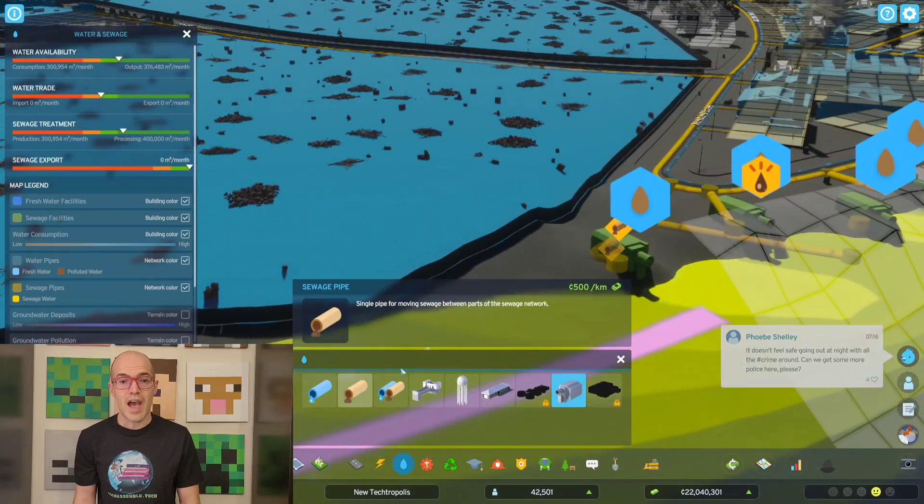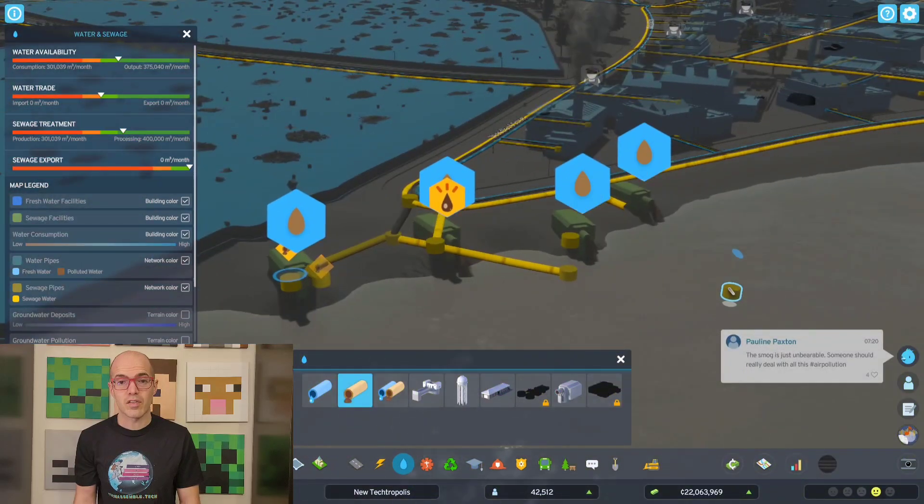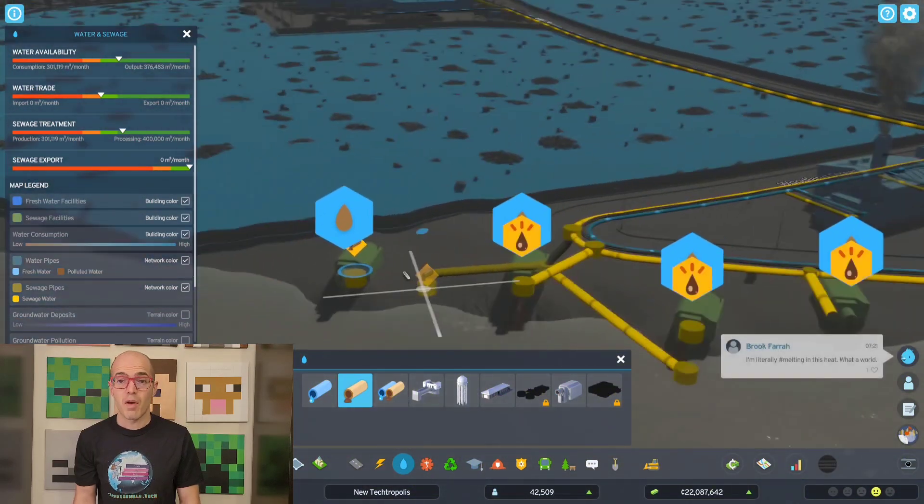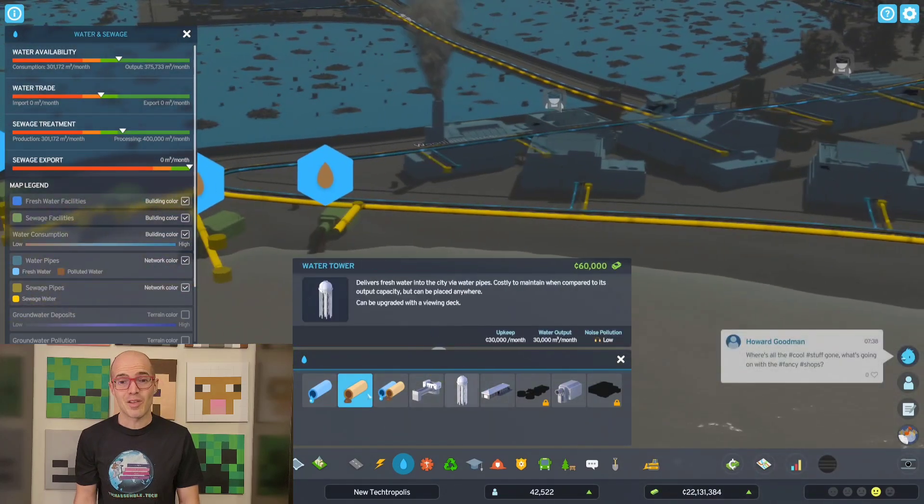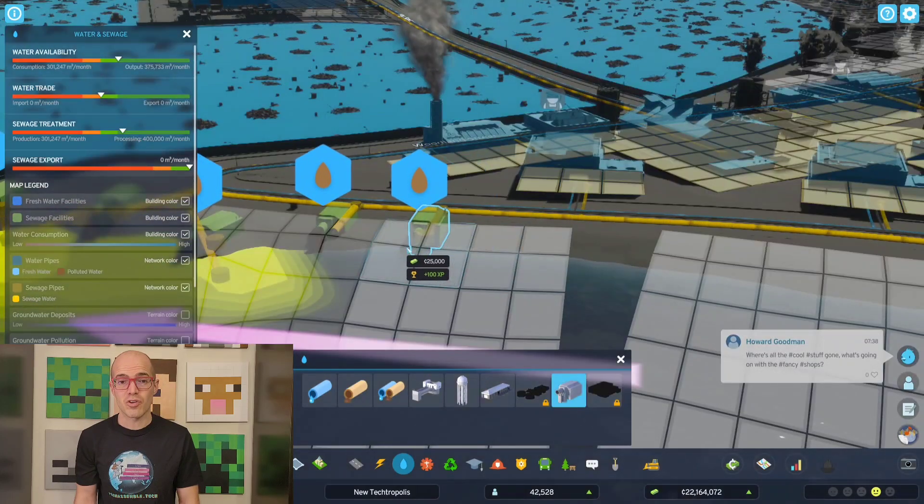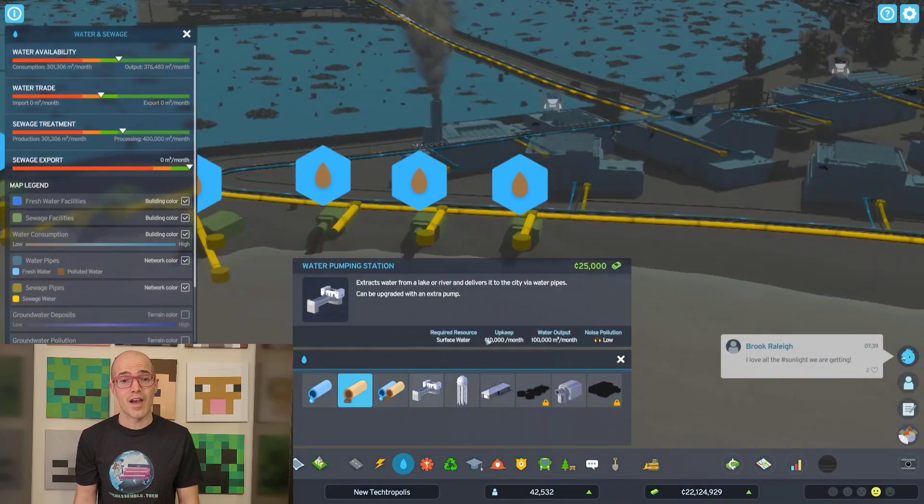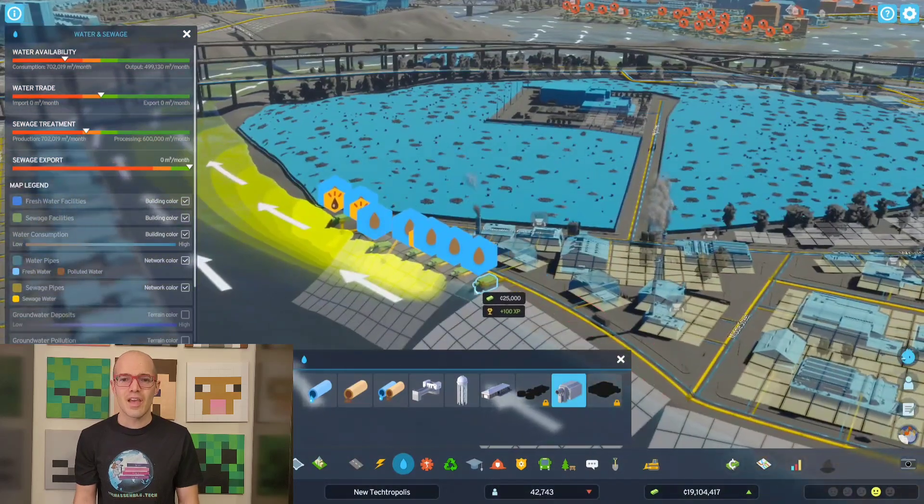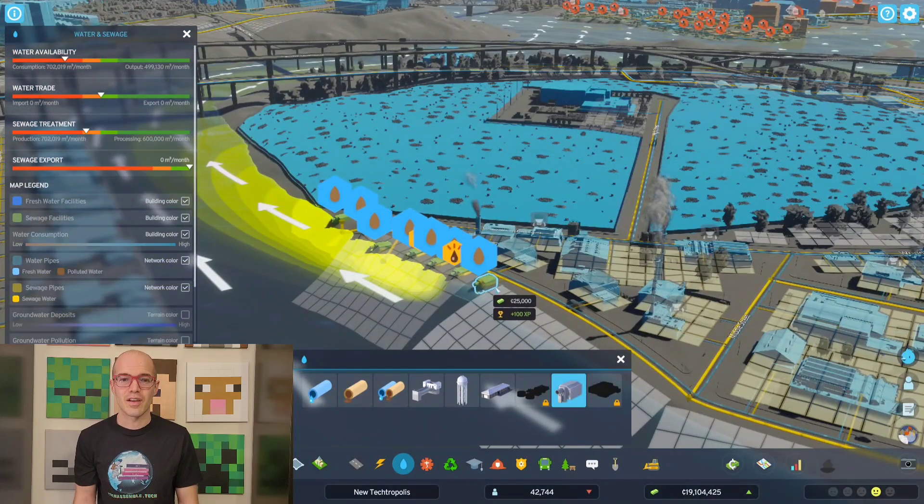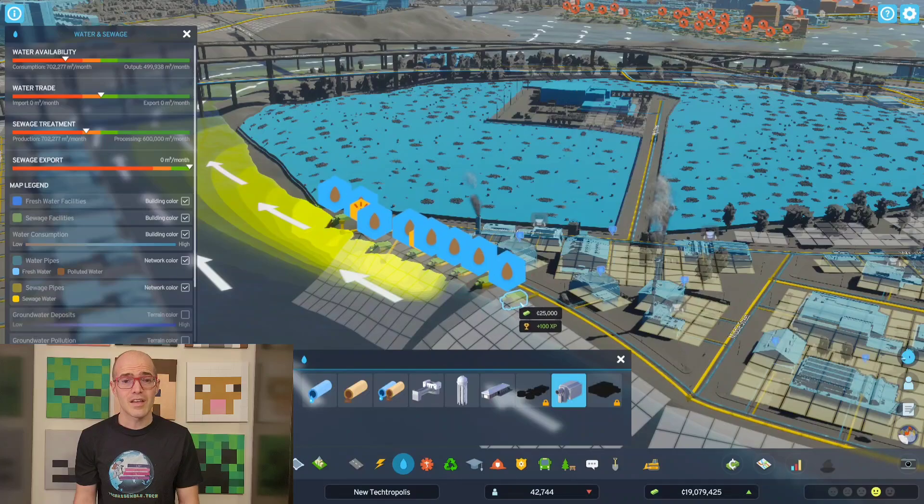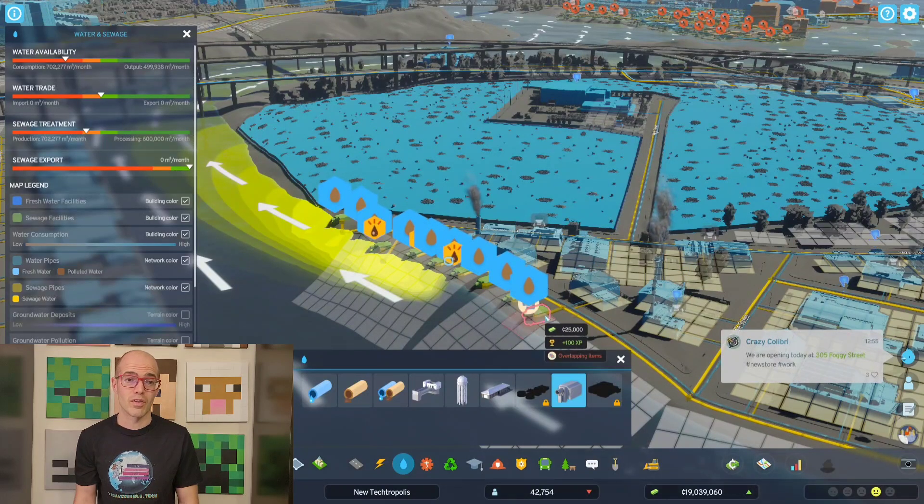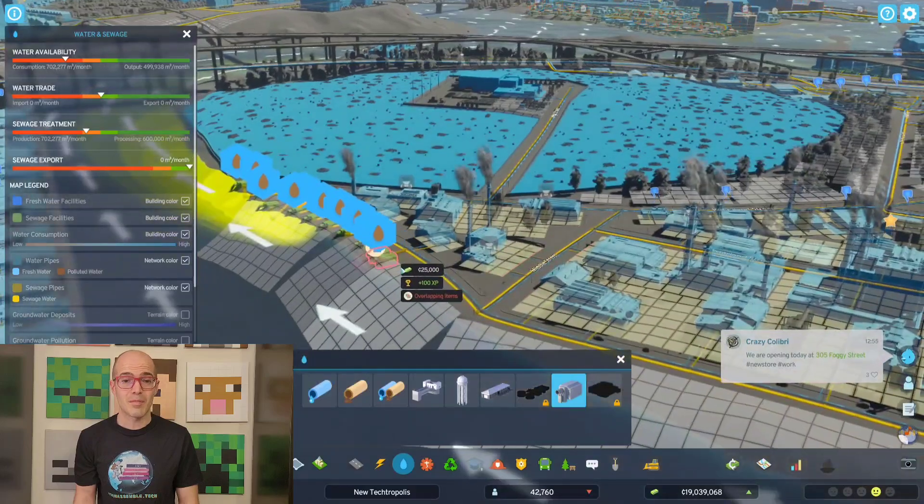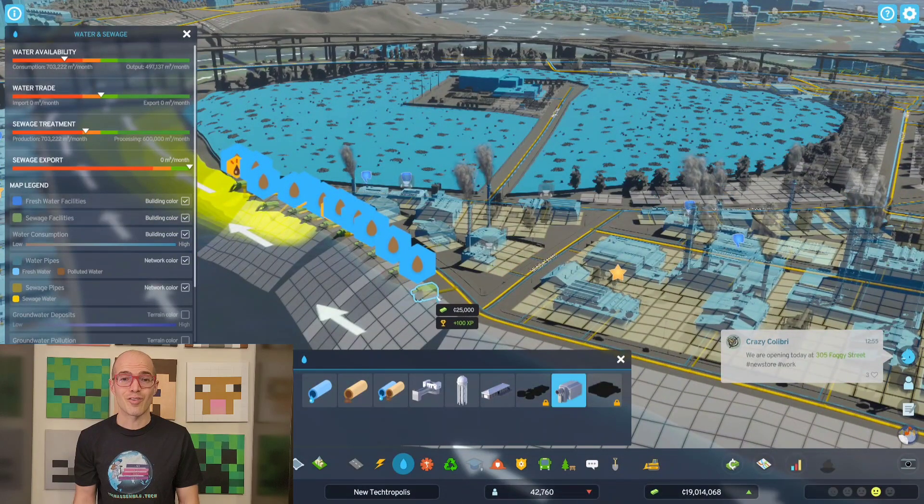In conclusion, atoms are the building blocks of the universe, from the smallest particle to the vast expanse of space. By unraveling their mysteries, we unlock the secrets of nature and push the boundaries of science and technology. Thanks for joining us today on Engineering Academy. Don't forget to like, share, and subscribe for more fascinating insights into the world of engineering. Until next time, stay curious, and never stop exploring.